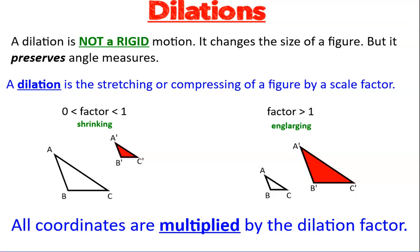A dilation is not a rigid motion. It changes the size of a figure. The only thing that does stay the same are the angle measures. So it preserves angle measures, but everything else will change. The side lengths will change, the area will change, the perimeter will change, but the angles never change.